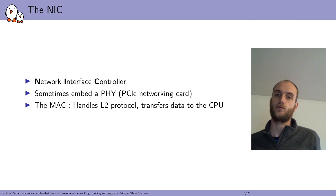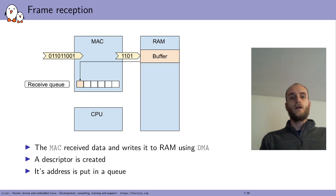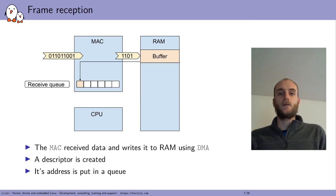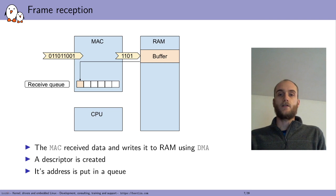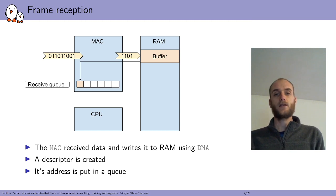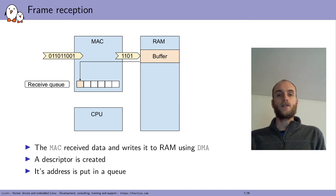The MAC transfers data from the PHY into RAM so the CPU can process it, and also works in reverse, transferring data from memory to the external world on the transmit path. When receiving a frame — a unit of data at the Ethernet level — the MAC receives data from the PHY and writes it directly into RAM using DMA, Direct Memory Access. Once the transfer is done, the MAC creates a descriptor, a small piece of information in RAM containing the address of the buffer, and the descriptor's address is put into a queue inside the MAC.